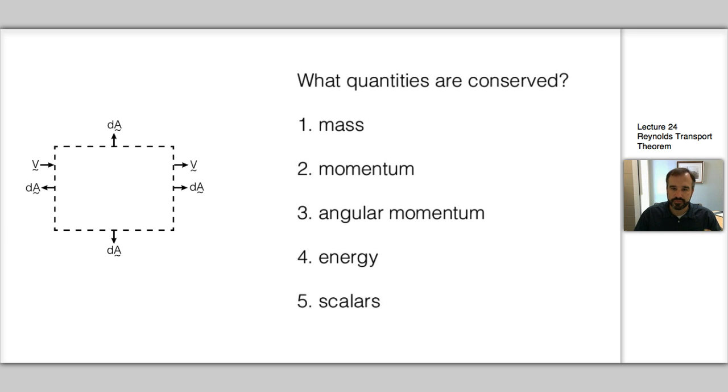So we've defined the differential area vector as always pointing normal outward of the control volume is positive. And so that allows us to have any directionality built in. For example, the v on the left hand side of the control volume is going into the control volume here.